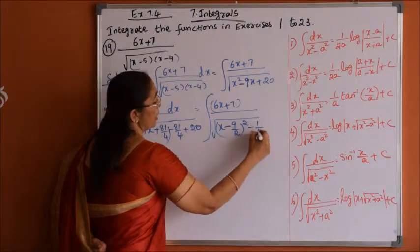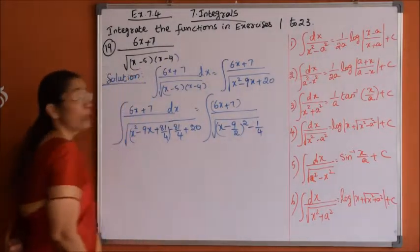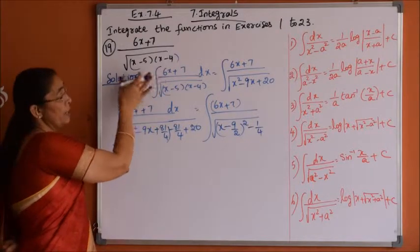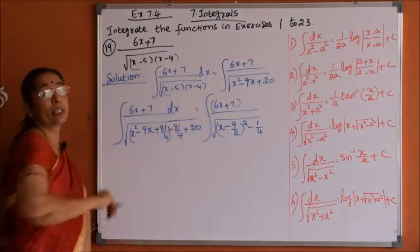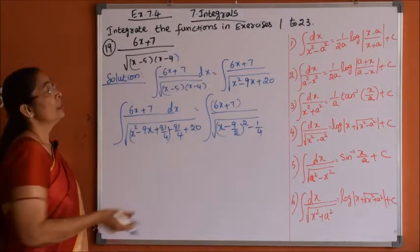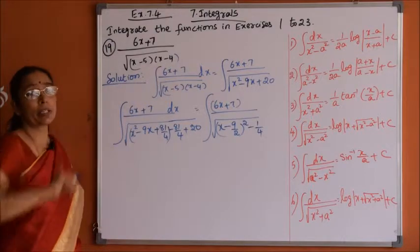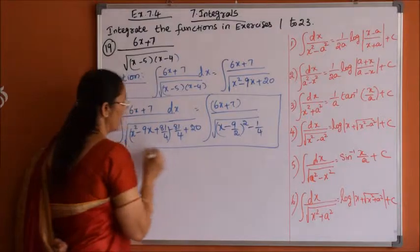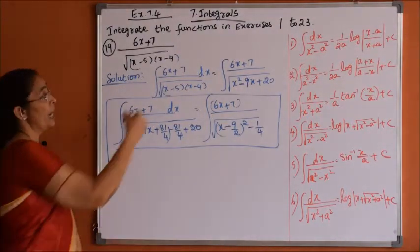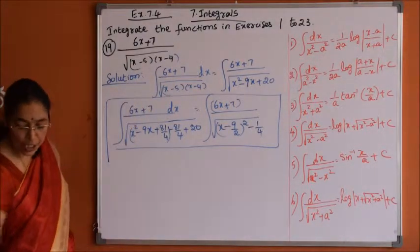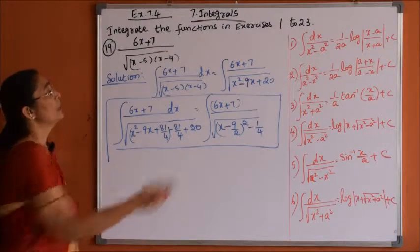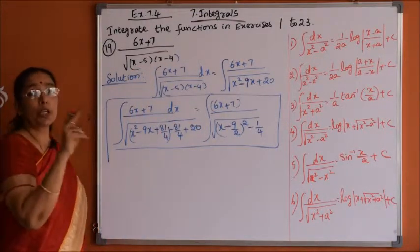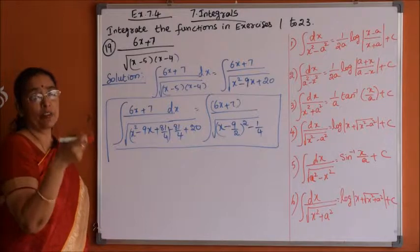Actually, first we should approach this using the px plus q form — we have done the completing square method first. Now we can proceed with the px plus q form while keeping the completing square result as it is. When the integration is of the form (px + q) divided by this expression, the numerator equals a times the differentiation of the denominator plus b.